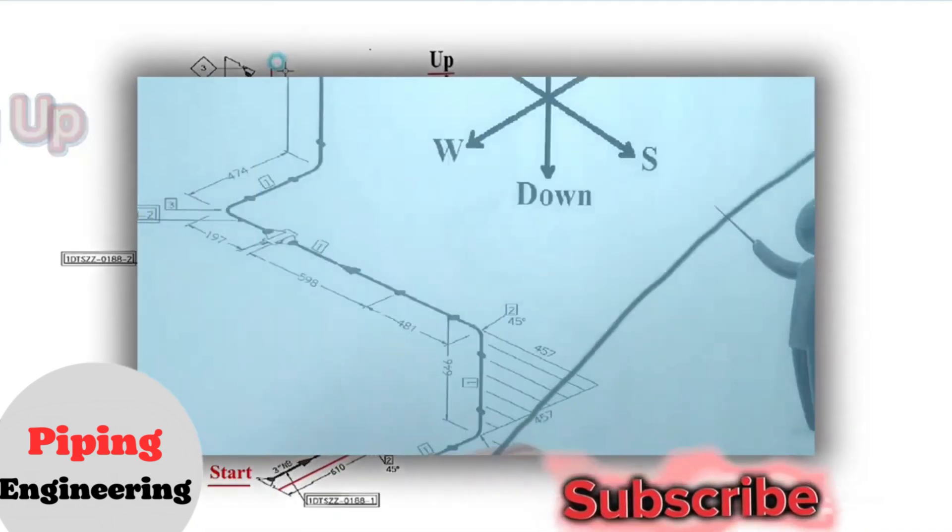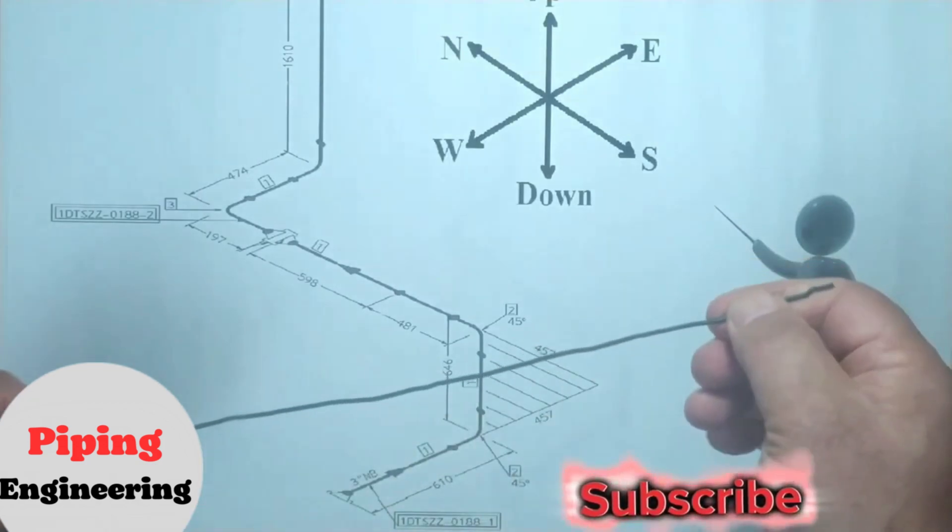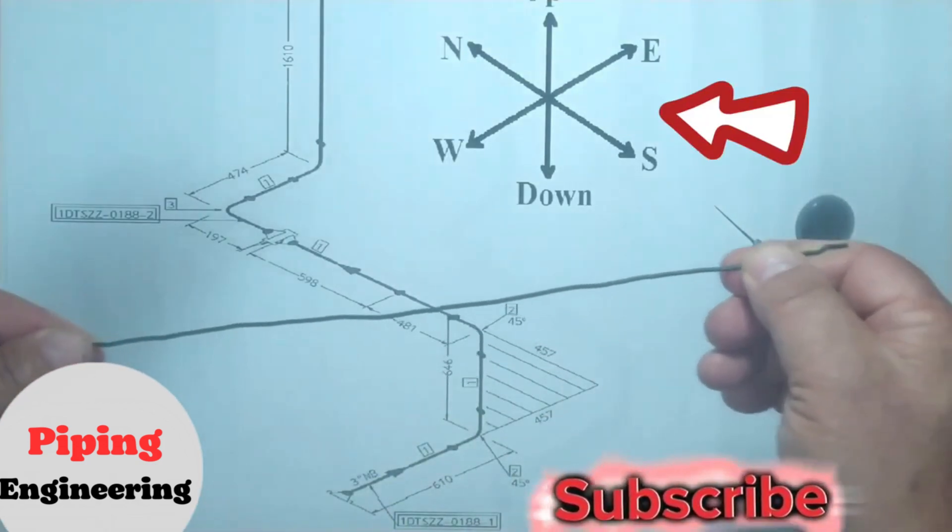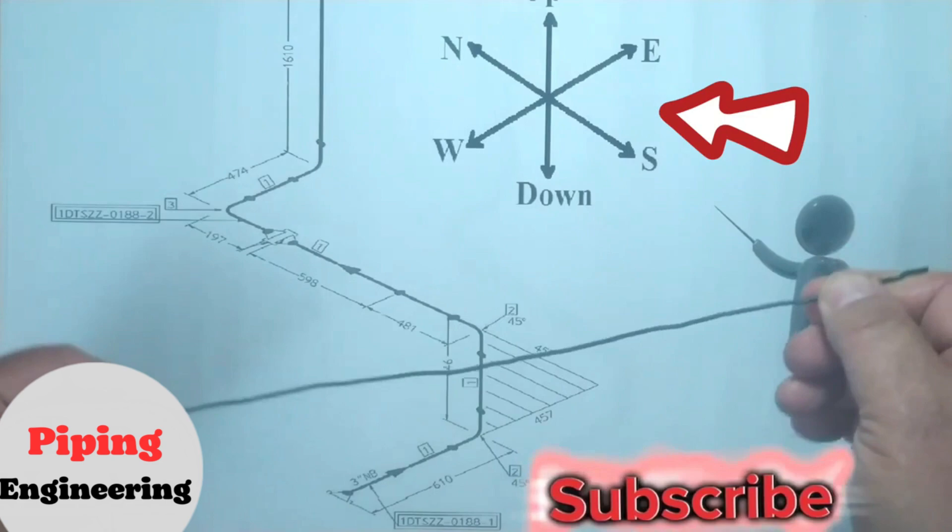Now let's bend the wire of this pipe drawing. This is our wire, the sketch showing these directions, this is the pipe isometric.